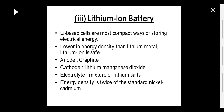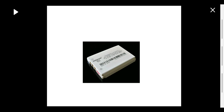Next is the lithium ion battery. Lithium-based cells are the most compact way of storing electrical energy — in a small space only we can store more amount of electrical energy. Although lower in energy density than lithium metal, lithium ion is safe. The anode is graphite, cathode is lithium manganese dioxide, and electrolyte is a mixture of lithium salts. Energy density is twice that of standard nickel cadmium. These are the batteries used in cell phones.